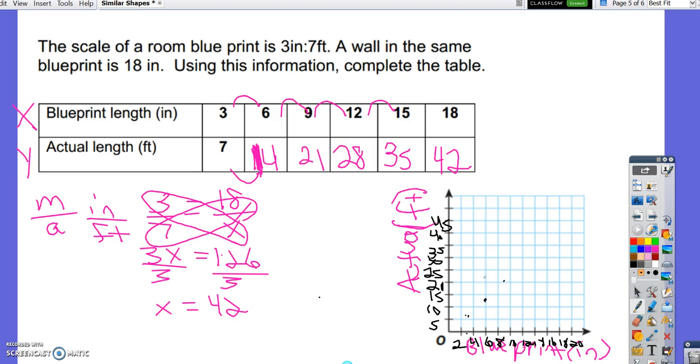And our next ordered pair is 12, 28. 2, 4, 6, 8, 10, 12. 5, 10, 15, 20, 25, 28, in the middle there. And we have 15, 35. Start at 0, 0, go right 15, in the middle of 14 and 16, and up 35. 5, 10, 15, 20, 25, 30, 35.